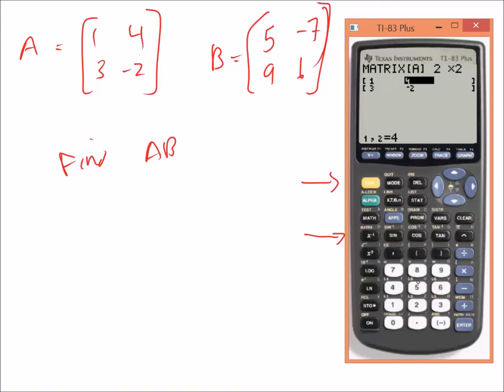Then you enter the values: 1 enter, 4 enter, 3 enter, negative 2 enter. And now you have this 2 by 2 matrix A with the values inside that you want.